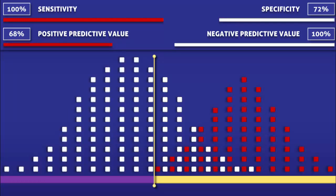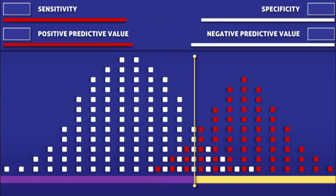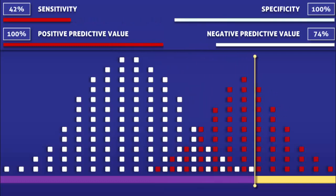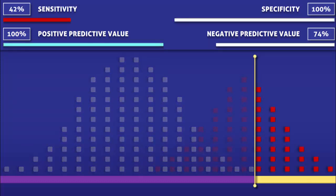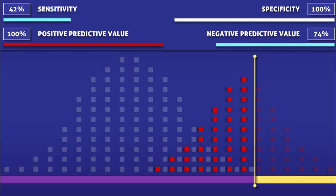Next, let's see what happens when the cutoff level for a positive test is shifted to the right. The test now has 100% specificity because everyone without the condition tested negative. The test also has a 100% positive predictive value because every single person with a positive test had the condition. The sensitivity and the negative predictive value, however, have decreased because the number of false negatives has increased.